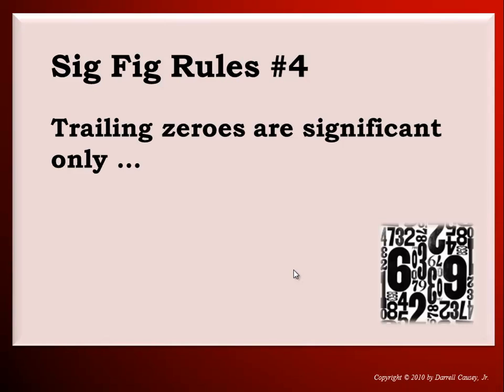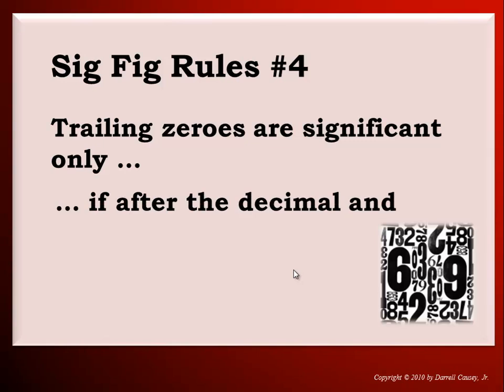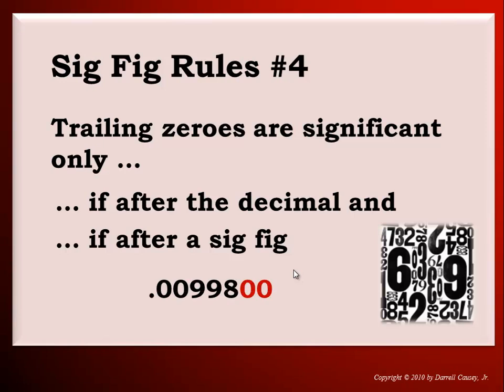Rule four: trailing zeros are significant only under two conditions — and this is an AND statement, not an OR. Both statements have to be true. The trailing zeros must be after the decimal point AND after a significant figure. So the two leading zeros are not significant in this number; however, the two trailing zeros are significant because it's after a decimal point and after significant figures. The two nines and an eight are significant automatically.